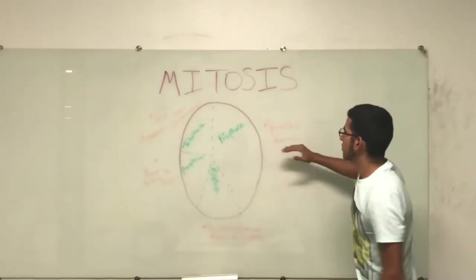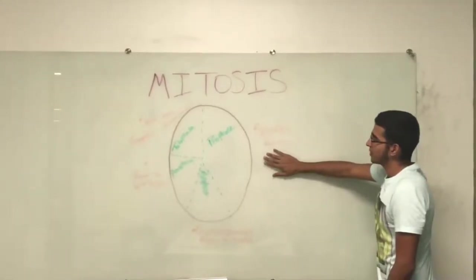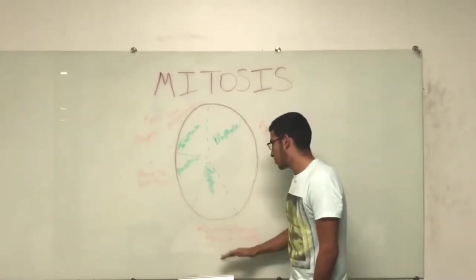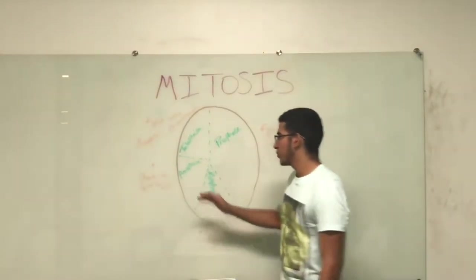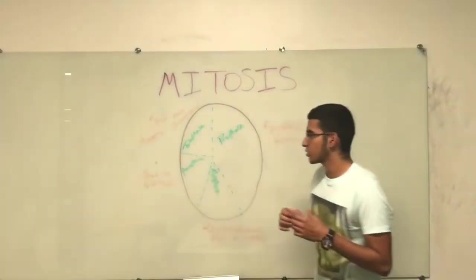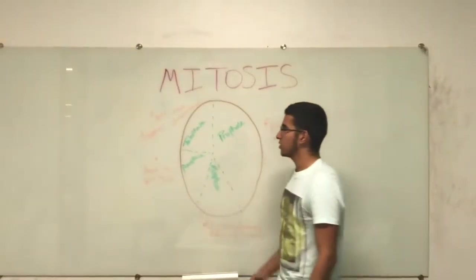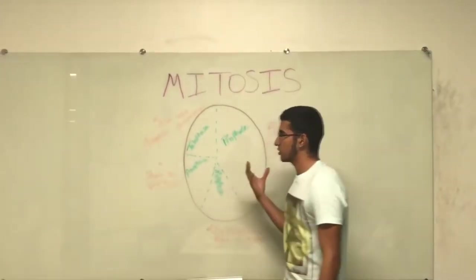Prophase is the longest phase, and the spindles start to form. Then we move over to metaphase, which is when the chromosomes are made in the middle. Then we move over to anaphase, which is when the chromosomes start to split, and that's when the cells actually start to split. And telophase is when it completely separates into daughter chromosomes.